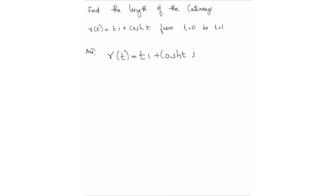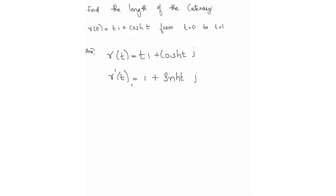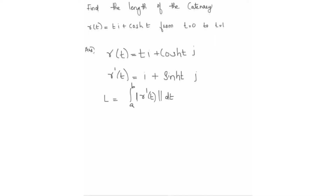Next, we find the first derivative. r'(t) — the derivative of t with respect to t equals 1. So the derivative of the i-component is 1.